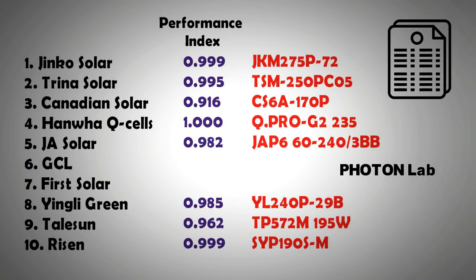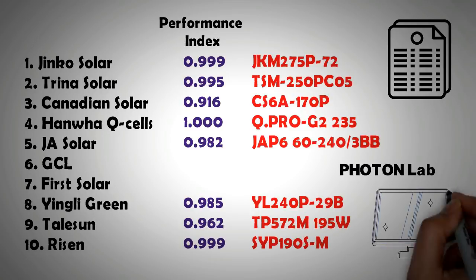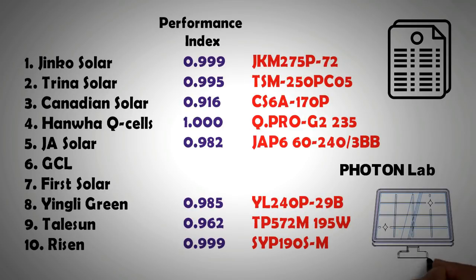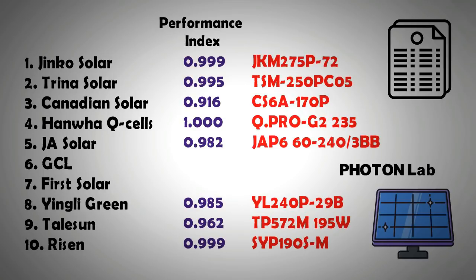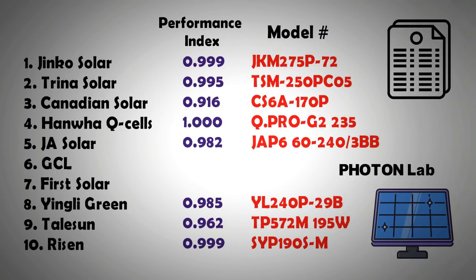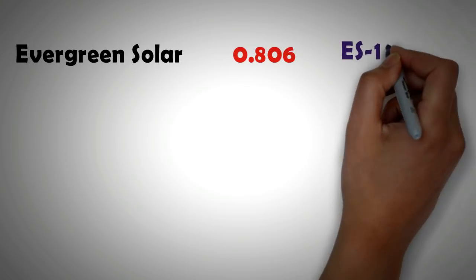Here's the same list of PV manufacturers along with the performance index of their best performing panels. From the results, it is evident that modules from the top 10 manufacturers generally have a high performance index with most of them performing above 91% of their stated values. Note that these performance values are module specific and therefore the model number of the panel is also listed on the site. The same company may produce solar panels that are not as high performing. The lowest performing module on the list was ES180RL by Evergreen Solar which performed only 80.6% against its own specifications.